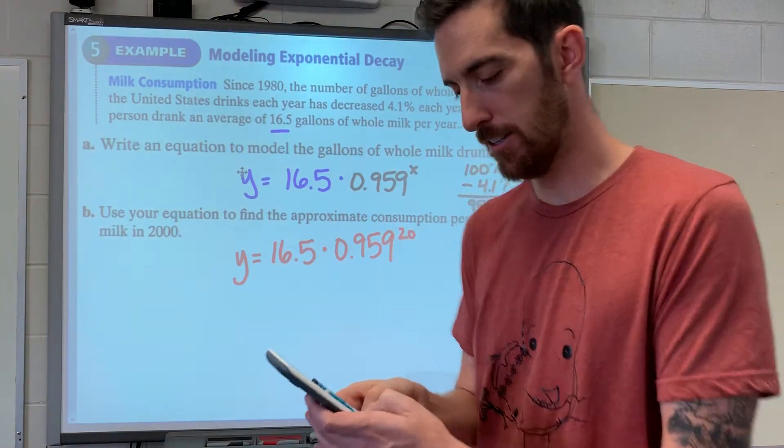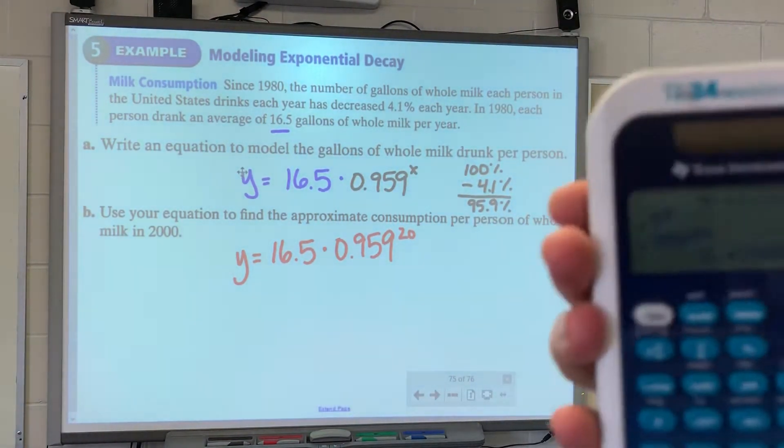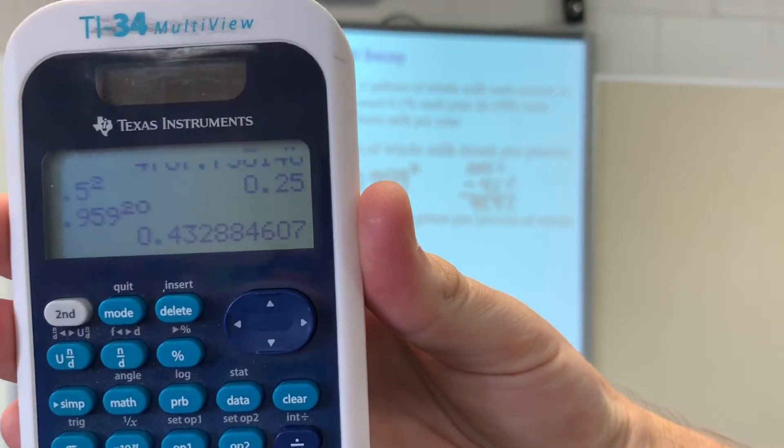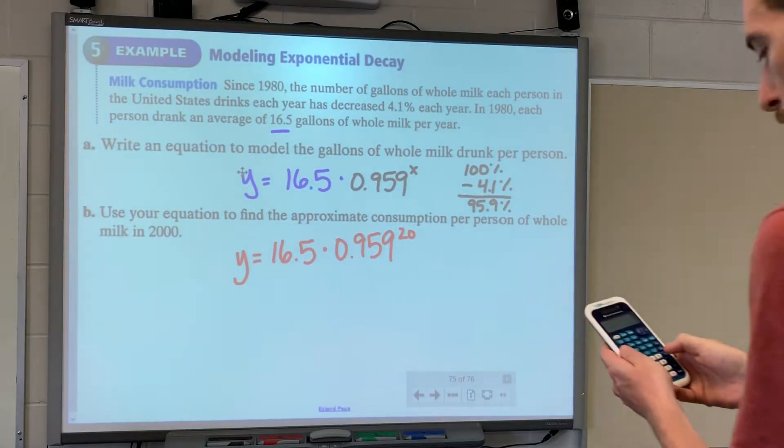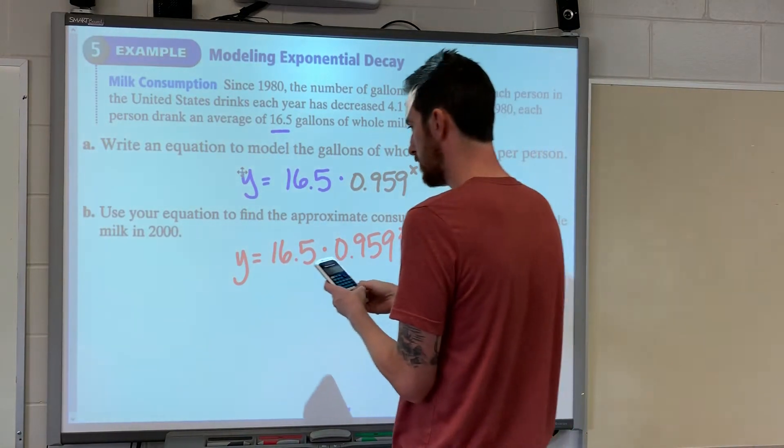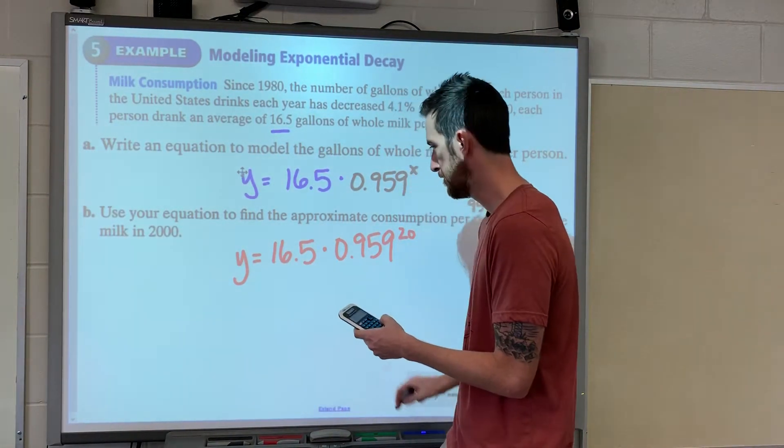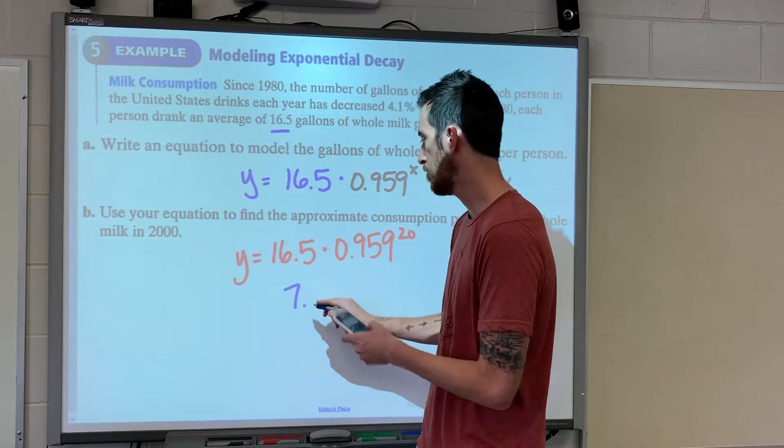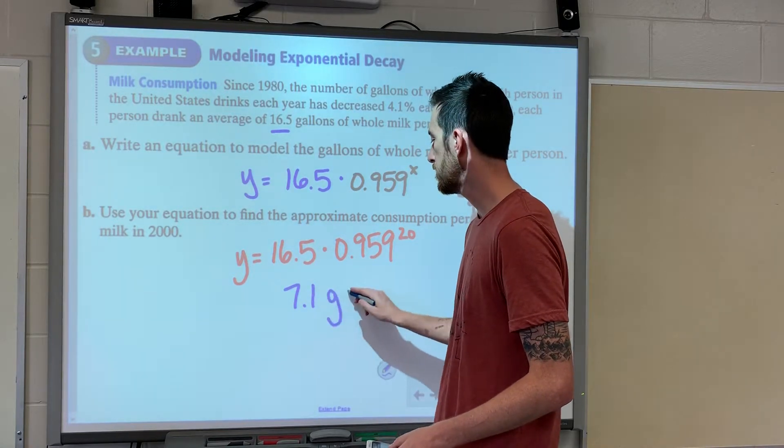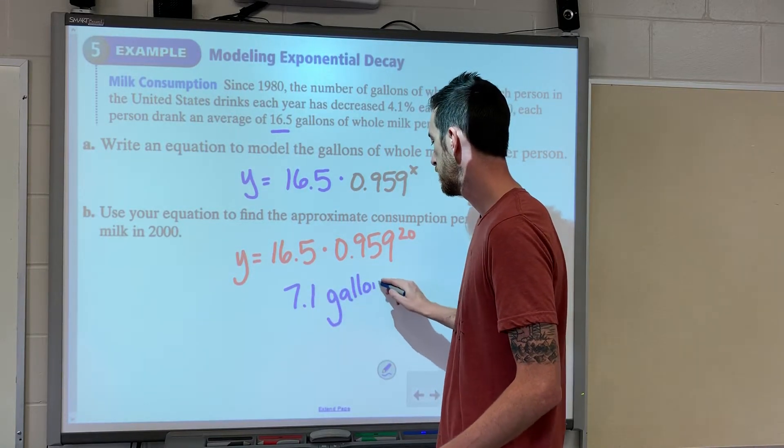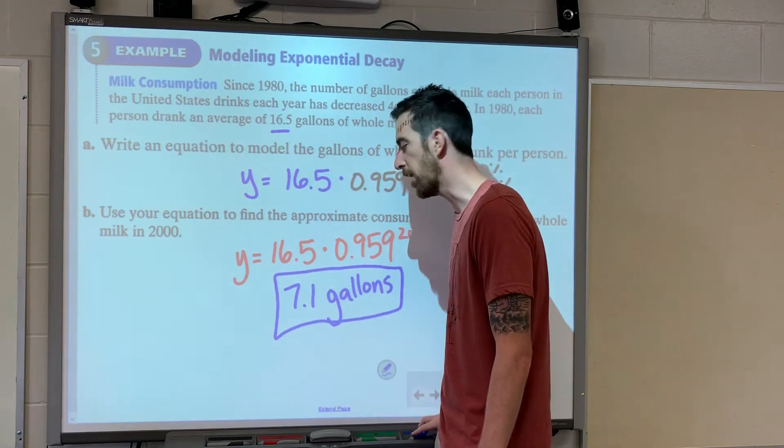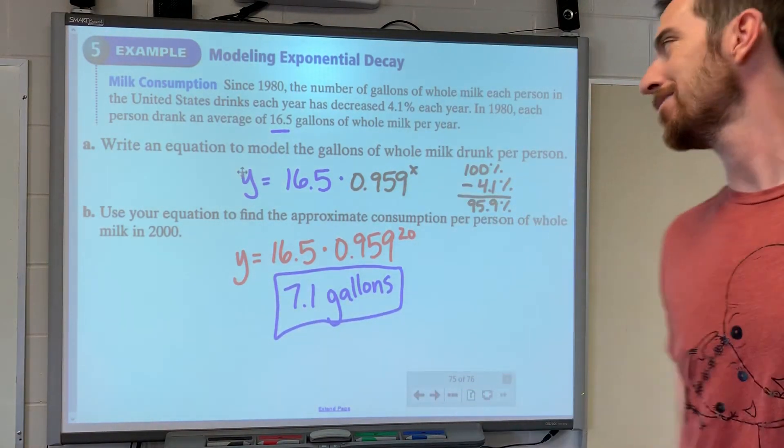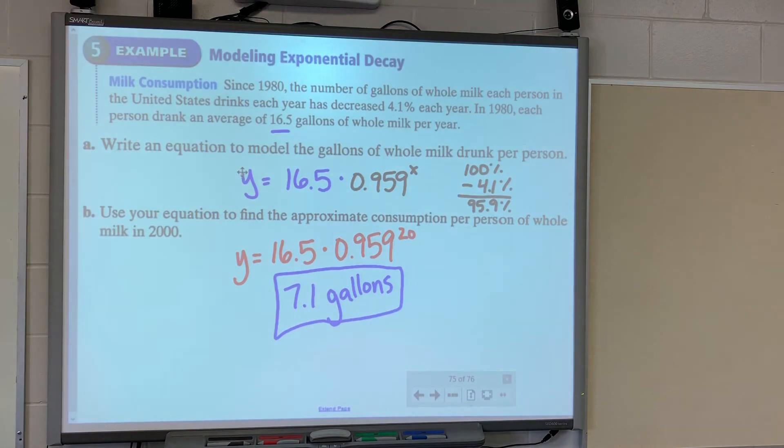So 0.959 to the 20th equals that, which is basically 43 percent. So it's going to be 43 percent of the initial amount times 16.5, which is 7.1 gallons of milk. It went down quite a bit. It used to be 16.5 gallons per year. Now it's down to 7.1 gallons per year.